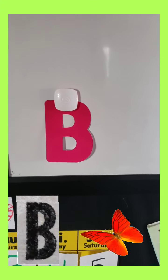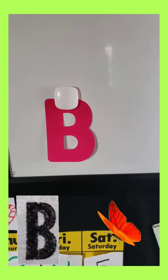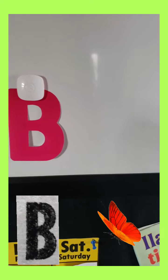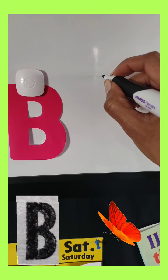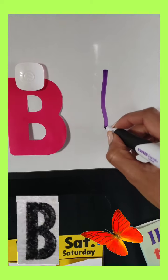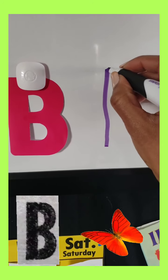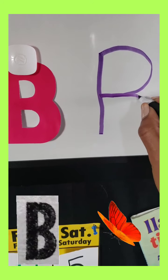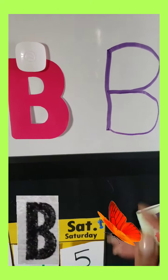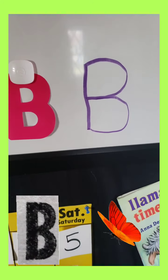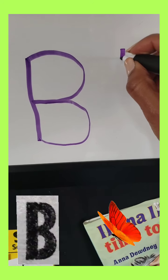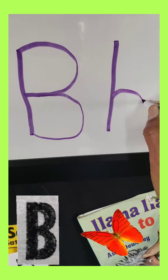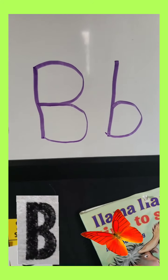Next letter is the letter B. The word bread begins with the letter B. The way we make B is you want to draw a vertical line going down, come back up to the top, and you're going to go around into the middle, and then go back and do another half a circle. And there you have your B, capital B. And little B is a vertical line going down, and right here in the middle you're going to give your line a belly. And there you have small B.